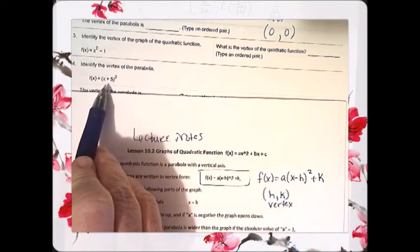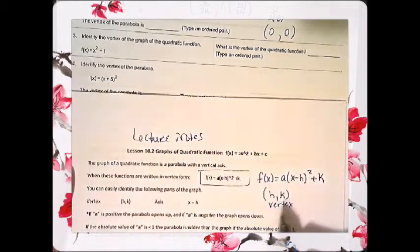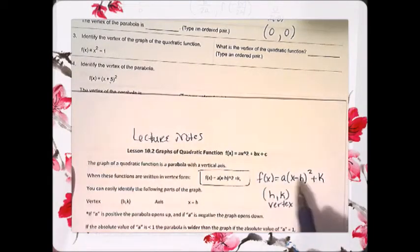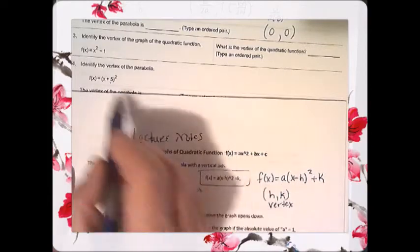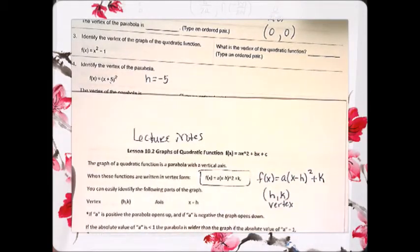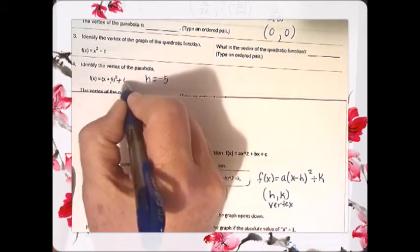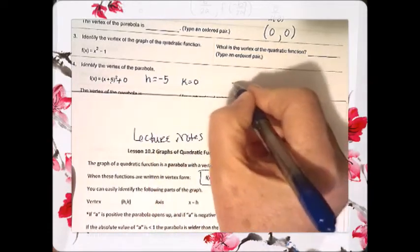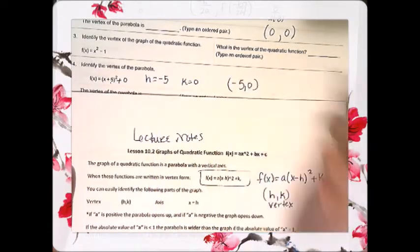Okay, so let's apply that here. Well, in the place of h, I see a positive 5. The formula has a negative sign. So, for me to get a positive 5 here, h must have been negative 5. K is located at the end. There's nothing added to the end. So, k must have been 0. So, this vertex is negative 5, 0.